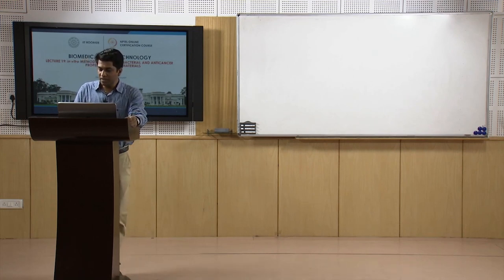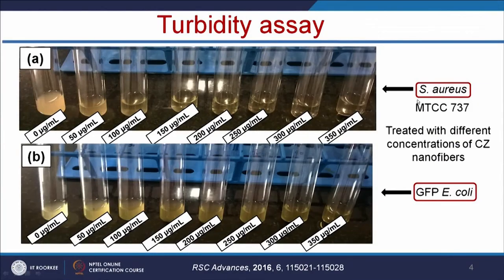In this experiment, we have selected Staphylococcus aureus (SRAS) as a gram positive model and E. coli as a gram negative model, and we have treated with different concentrations of copper zinc nanofibers. Here, you will be taking an equal amount of bacteria in the test tube and adding different concentrations of your nanomaterials. In the control, where there is no nanomaterial, you can see the growth of bacteria visible by the turbidity. With respect to concentration, you can see the turbidity going down.